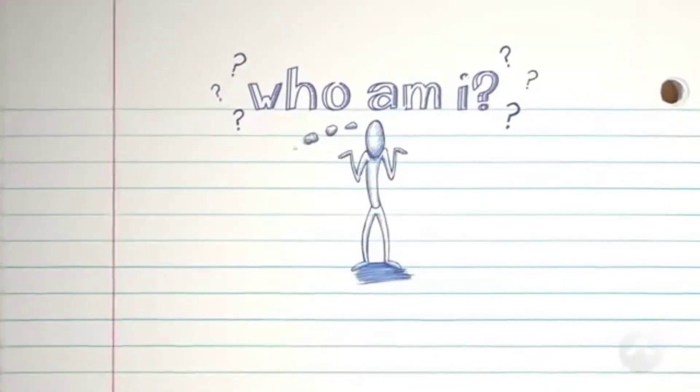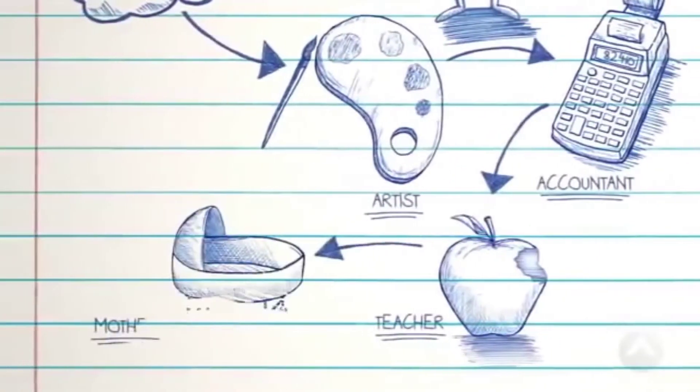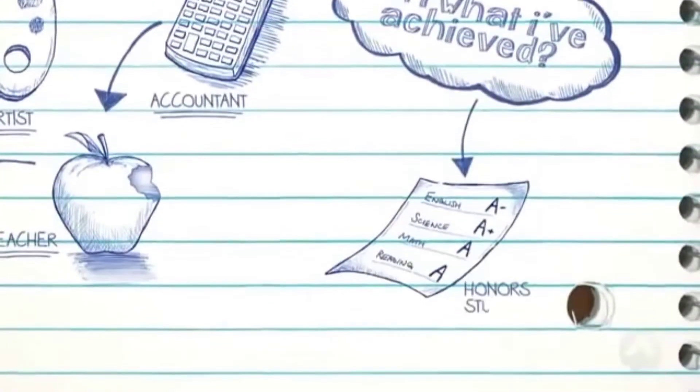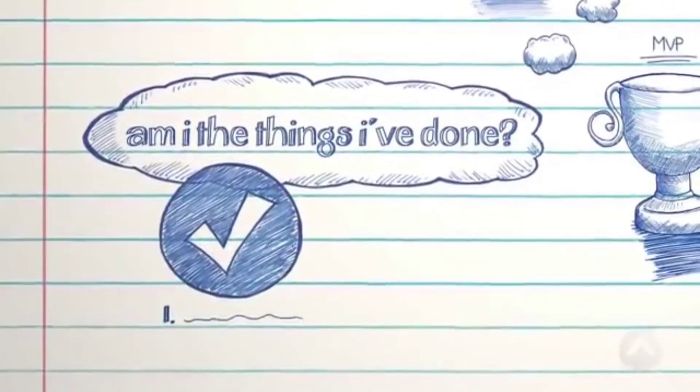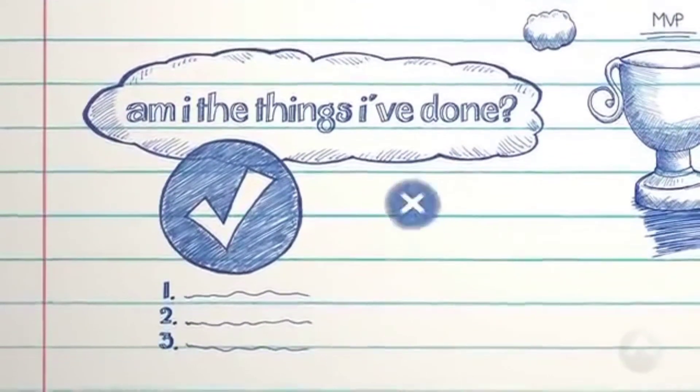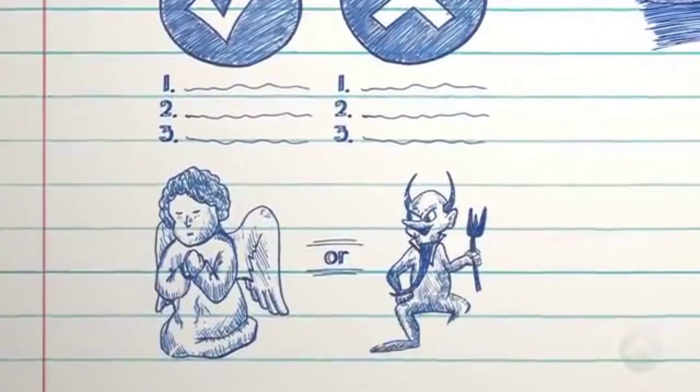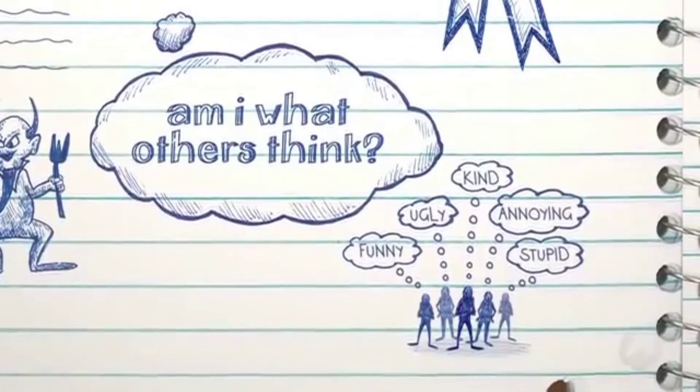Who am I? Am I what I do? An artist, an accountant, a teacher, a mother? Or am I what I've achieved? An honor student, an MVP, a winner? Am I the things I've done right, or am I defined by the things I've done wrong? Am I a saint, a sinner? What about what others think of me?